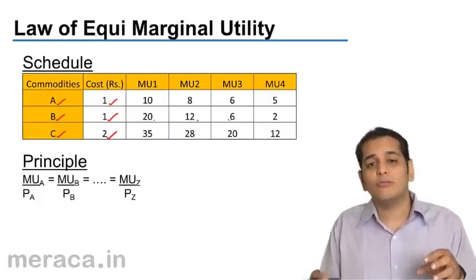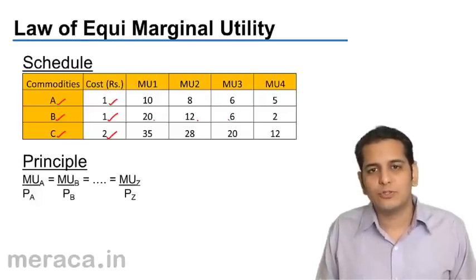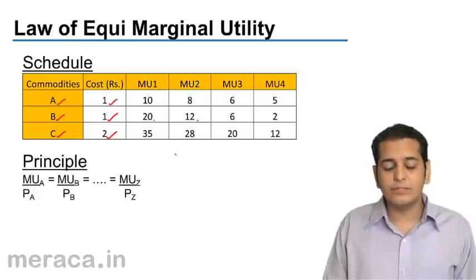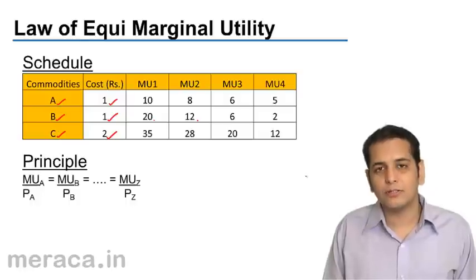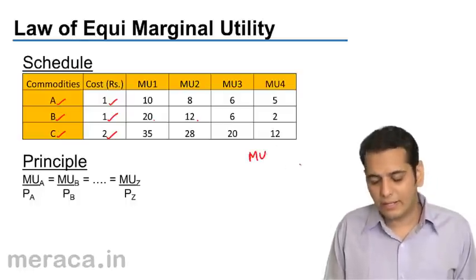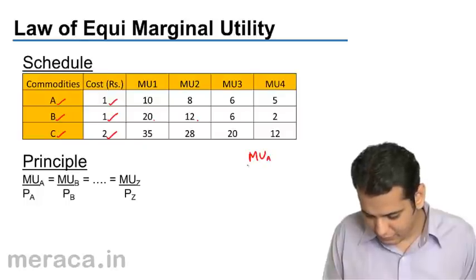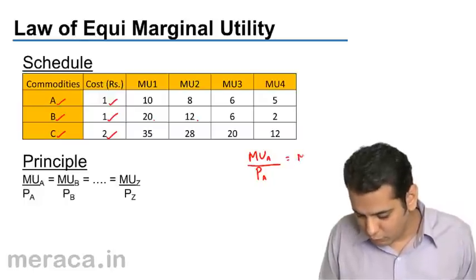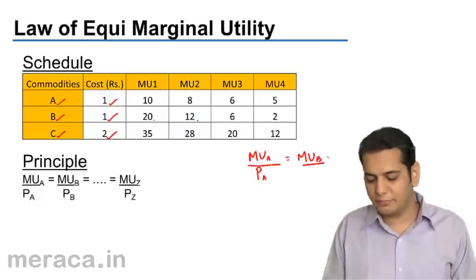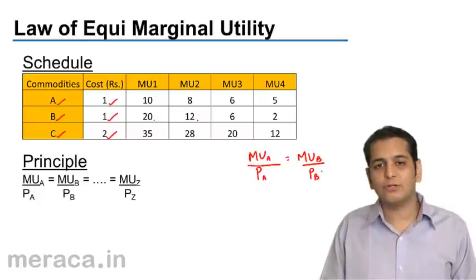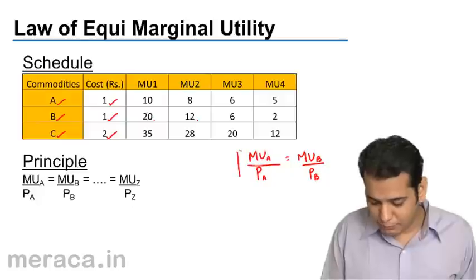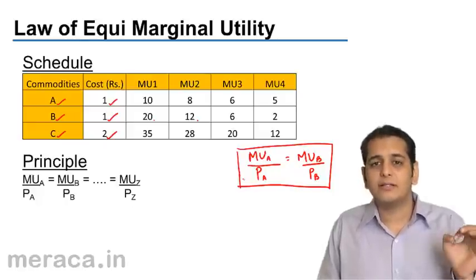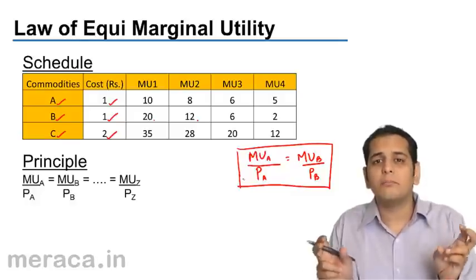This is answered by the principle: marginal utility derived from Commodity A divided by the price of Commodity A should always equal marginal utility of Commodity B divided by the price of Commodity B. When this principle is satisfied, we can say that the consumer has reached a level of equi-marginal utility.